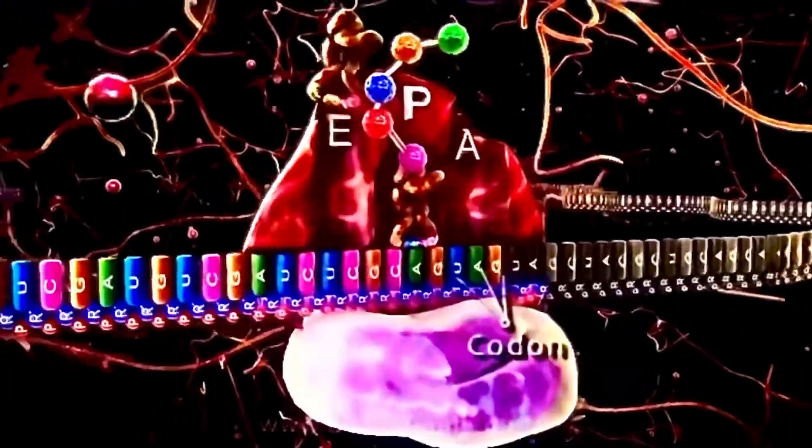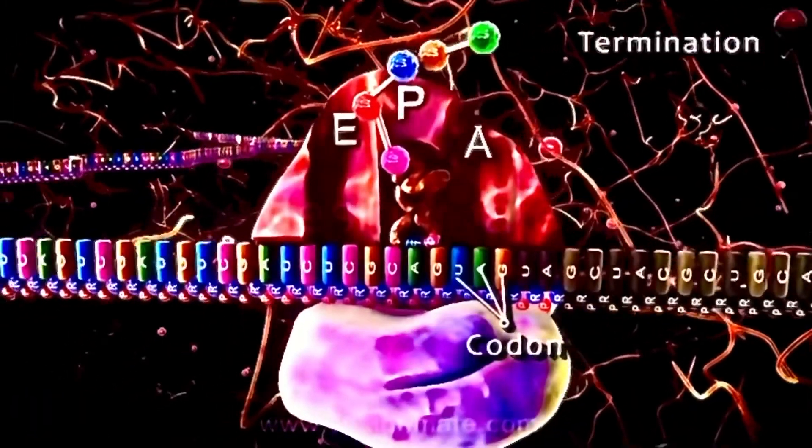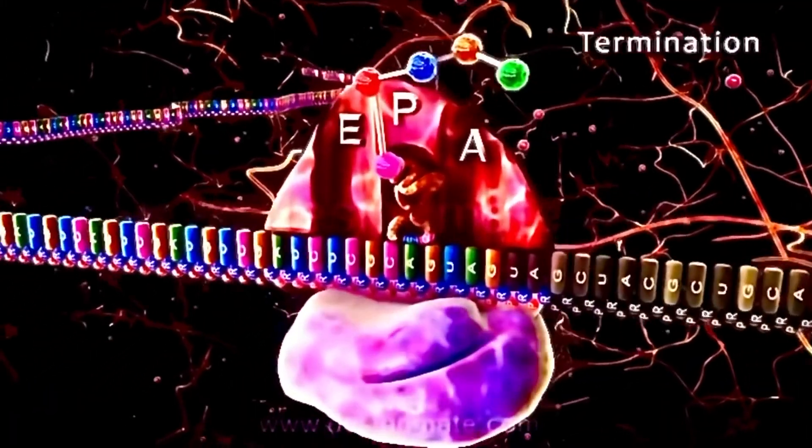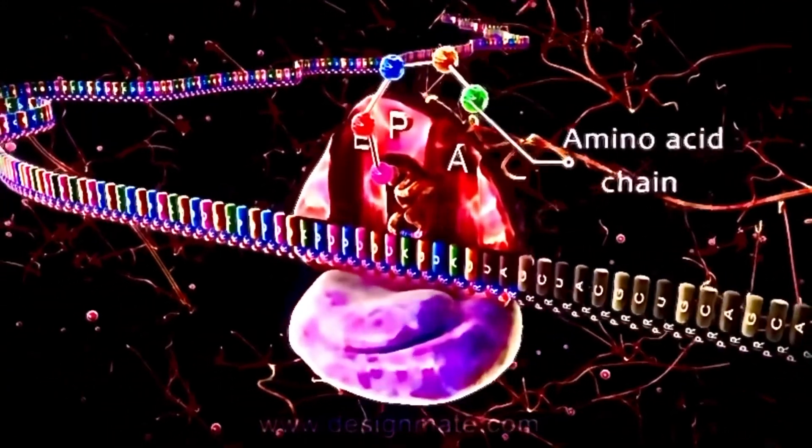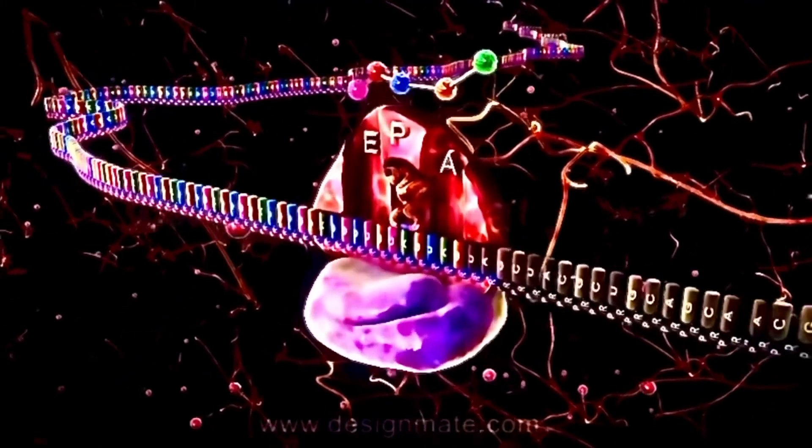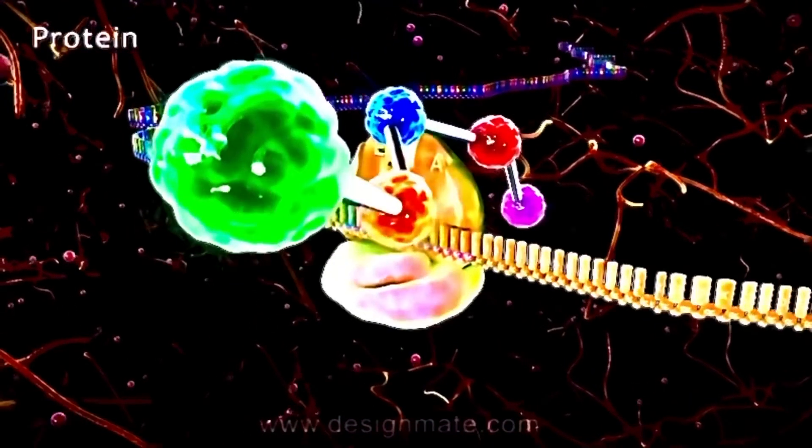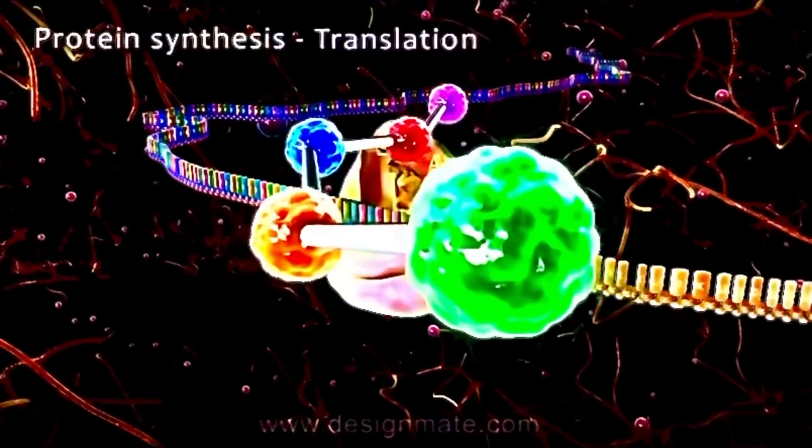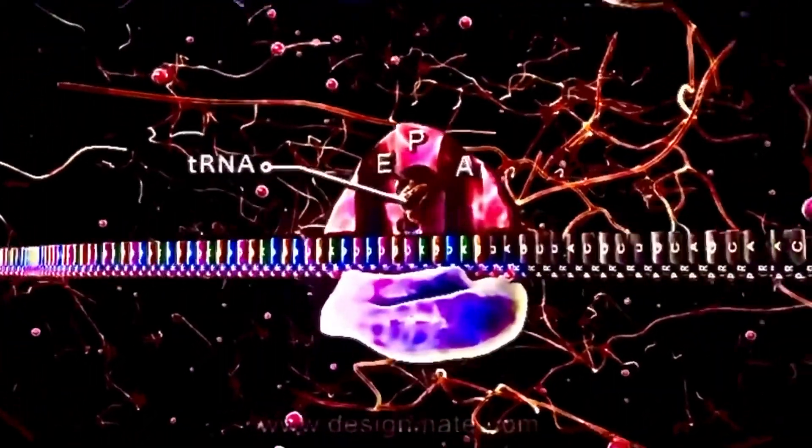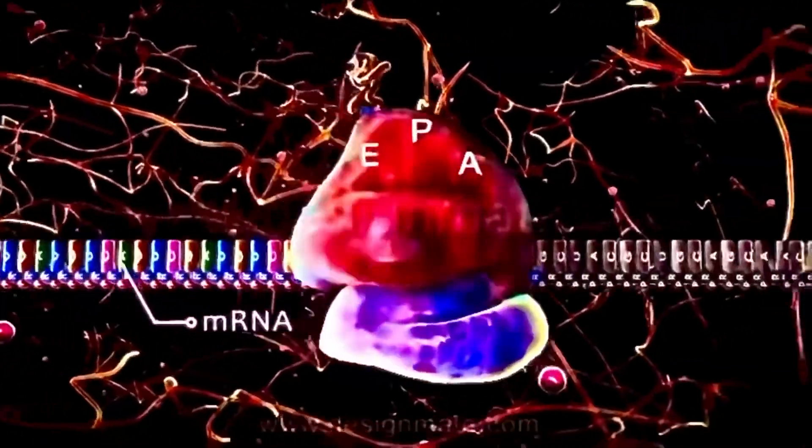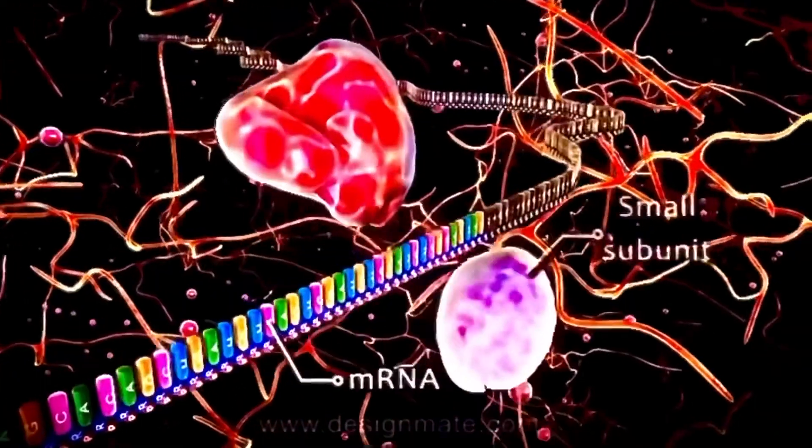Finally, when the UAG codon, or the stop codon, reaches the A site, elongation is terminated. Termination is the last stage of protein synthesis. The chain of amino acid molecules is released from the ribosome. This released amino acid chain is the protein, and this part of protein synthesis is known as translation. Then the tRNA detaches from the mRNA. Ribosome detaches and dissociates into its small and large subunit.